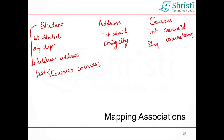Suppose in case of Courses, if I am going to have a list of students, the meaning here is one course can be taken by any number of students. So the relationship here is many-to-many. It means one student can take any number of courses, and one course can have any number of students.